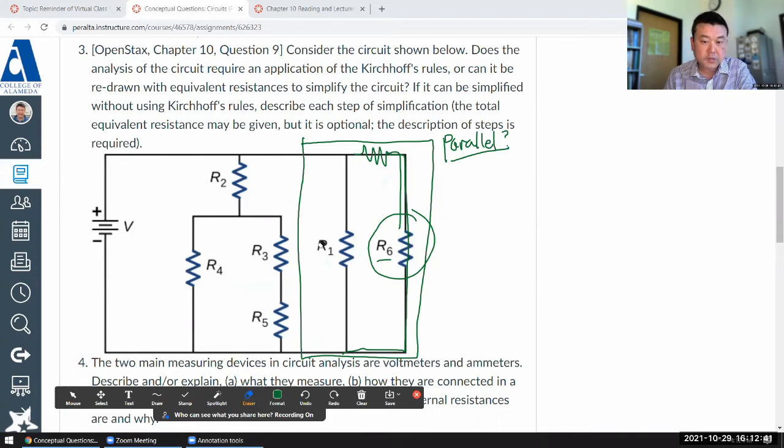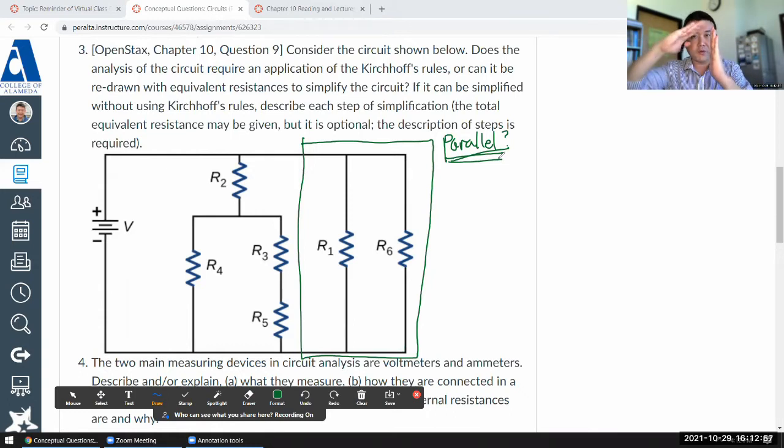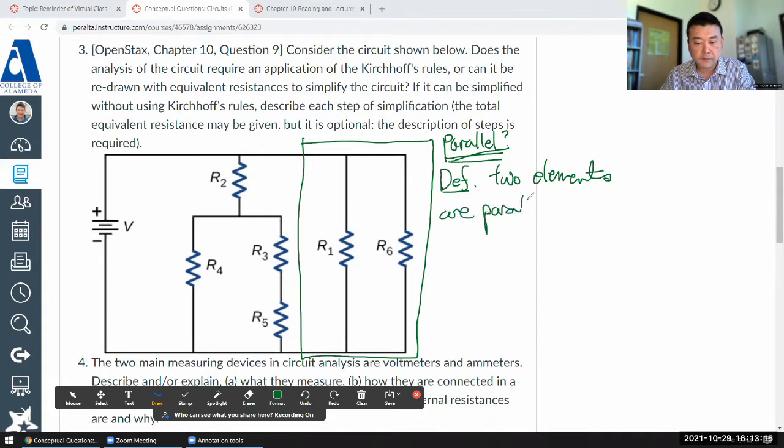If you imagine this resistor being moved over to here and just being placed here and the rest is wire, that kind of change doesn't actually change anything real about the circuit. Whether your circuit is represented with R1 and R6 this way or that way, it's still the same circuit. When you are physically building the circuit, the geometric arrangements don't matter. What matters is the topology: where are the junctions, what things are connecting to that junction. With that in mind, this is the definition: two elements are parallel when they have same voltages and corresponding endpoints.